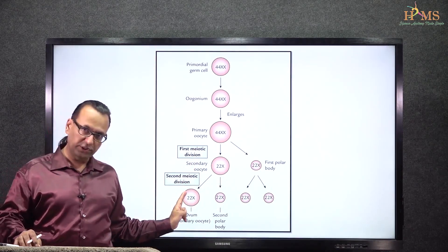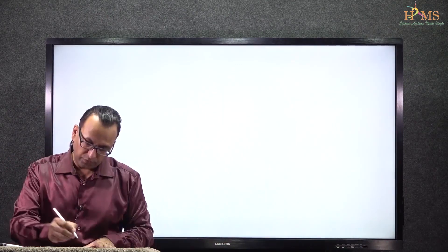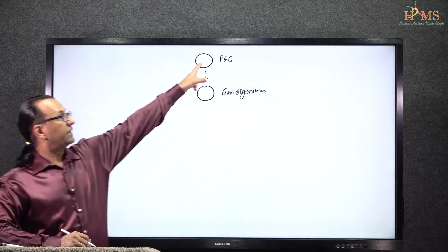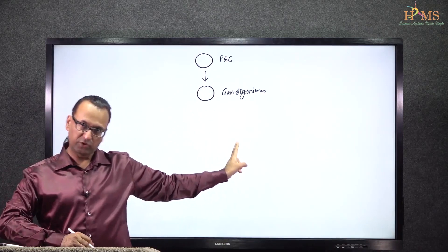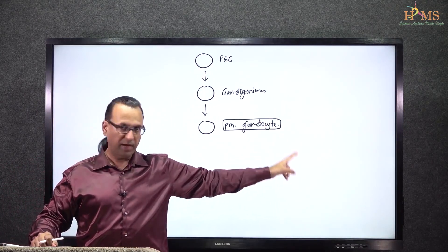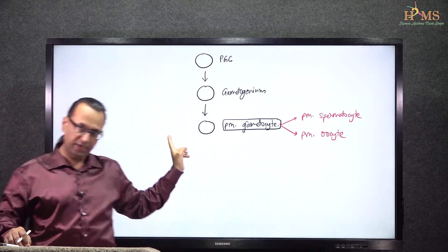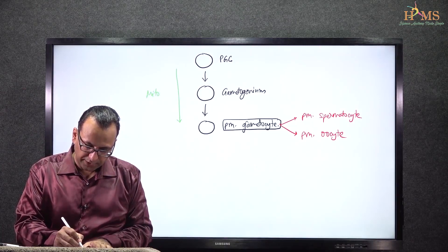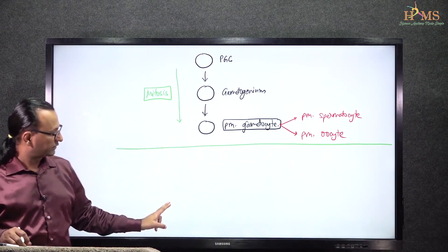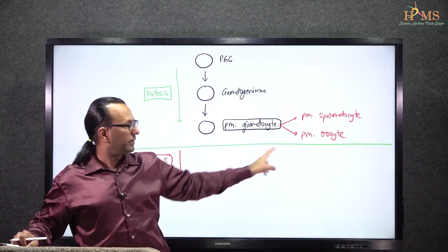There are two stages of meiosis, but before that, mitosis keeps happening. Let us draw this diagram ourselves. We are talking about the primordial germ cell which gives us the gametogonium, and it is the gametogonium which gives us the primary gametocyte. This could be primary spermatocyte or primary oocyte, and all these conversions occur with the help of mitosis. After that begins the meiosis, so which cell will be undergoing meiosis, especially meiosis one? Obviously, it could be primary spermatocyte or primary oocyte.